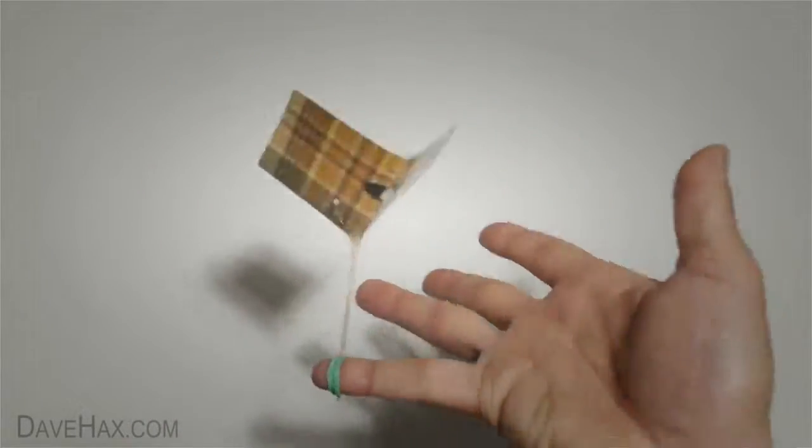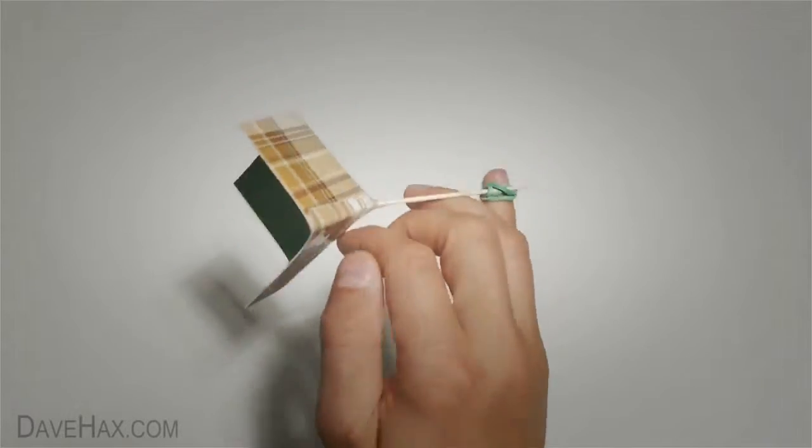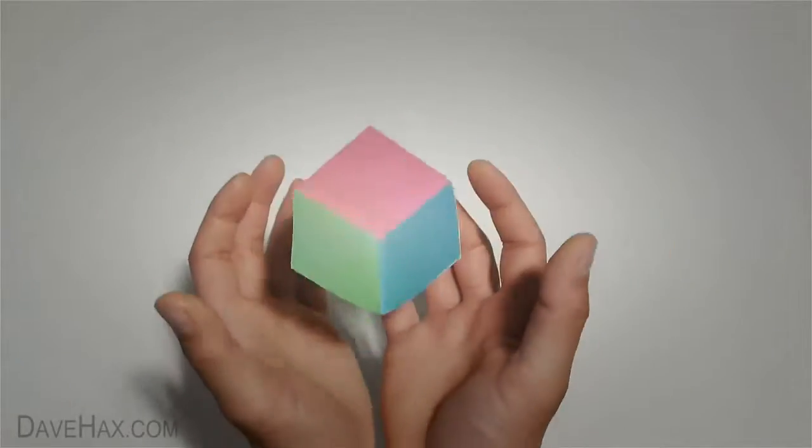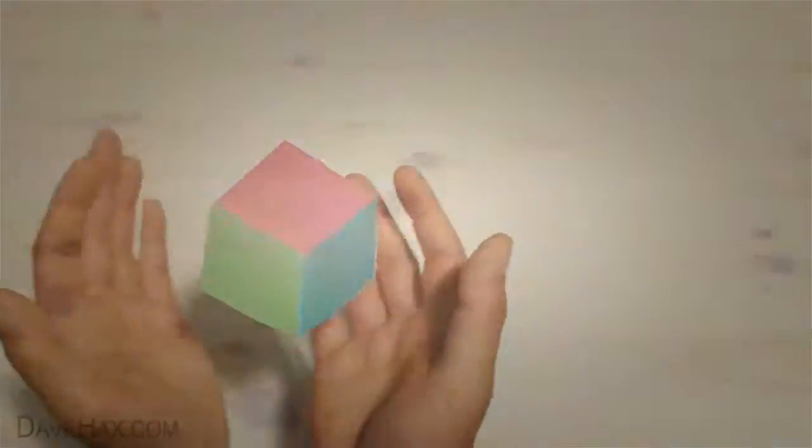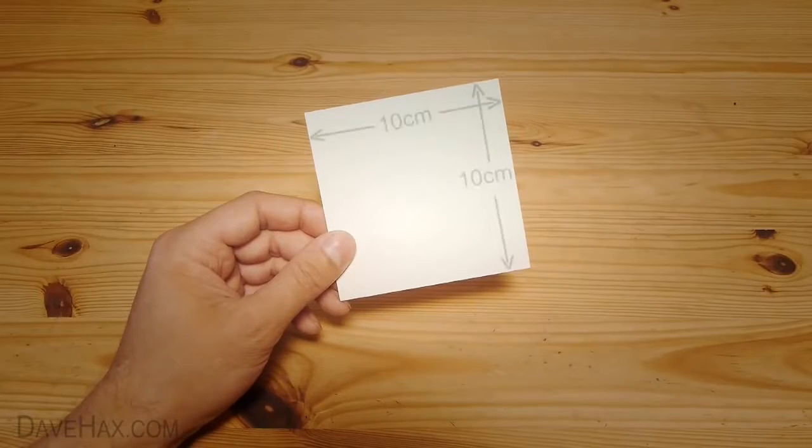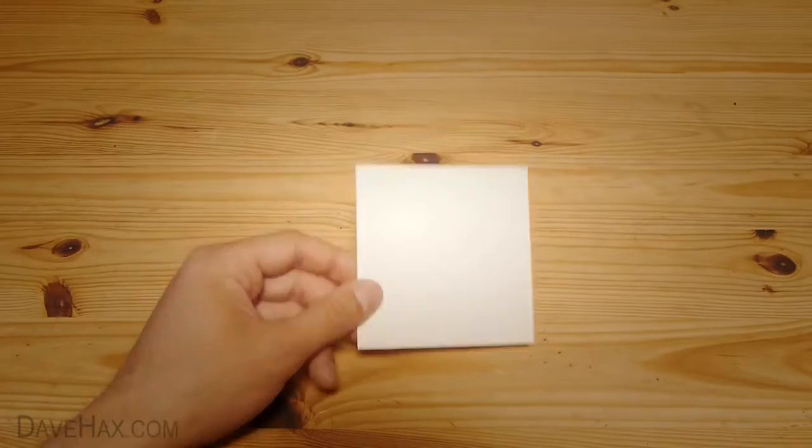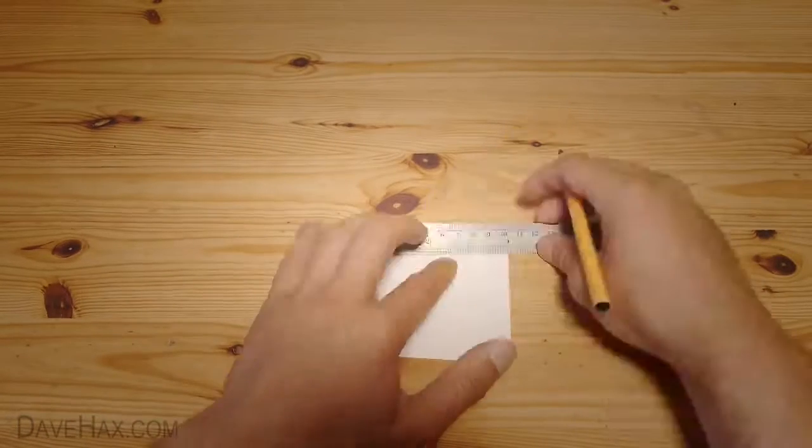But unfortunately, it's all just an illusion. And here's how to do it. Start by taking a piece of card. This one measures 10cm square. Then mark out two lines straight through the middle, like this.